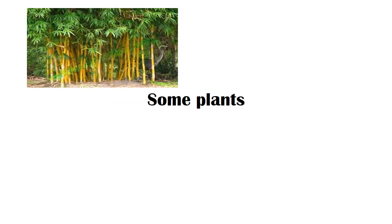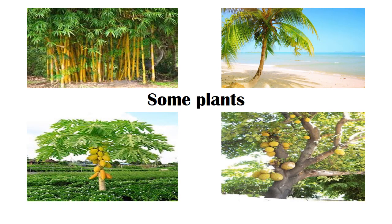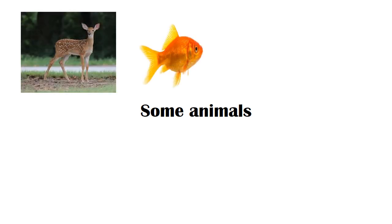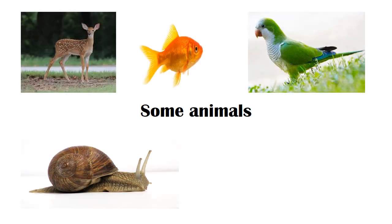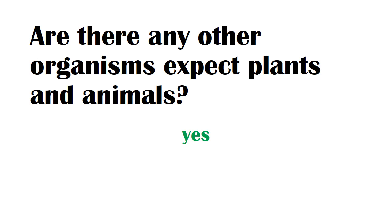Examples of plants: bamboo, coconut, papaya, jackfruit. Examples of animals: deer, fish, parrot, snail, butterfly. Are there any other organisms besides plants and animals? Yes, there are many organisms besides plants and animals.